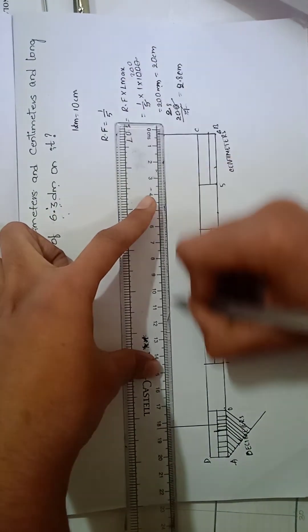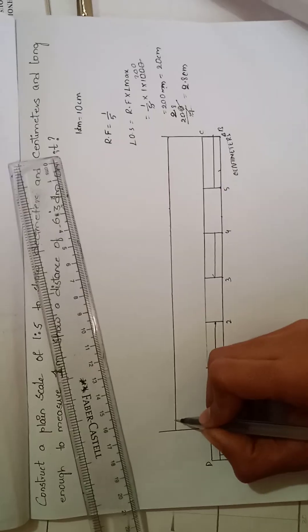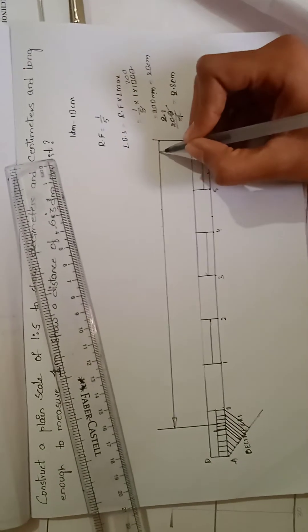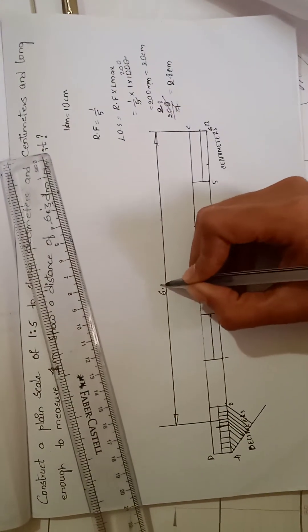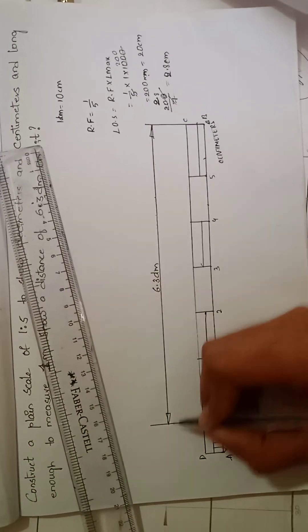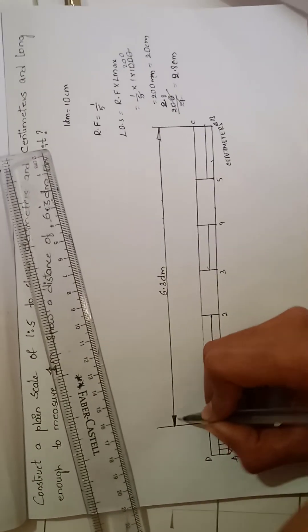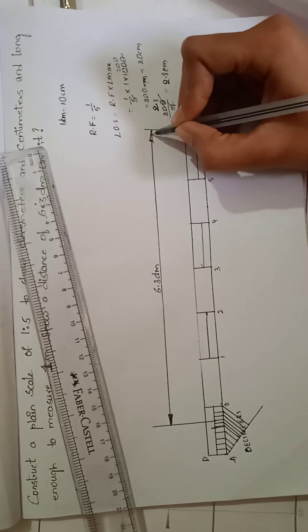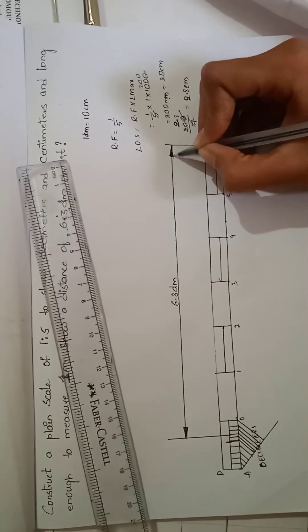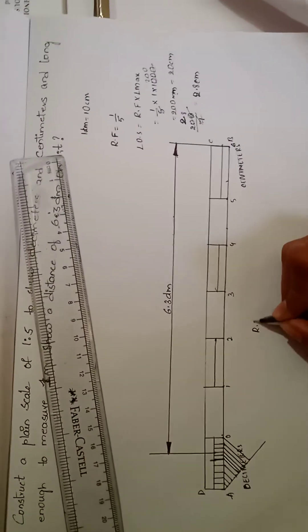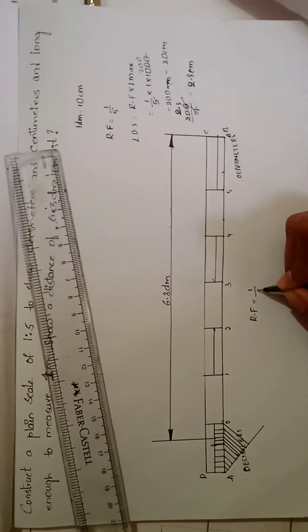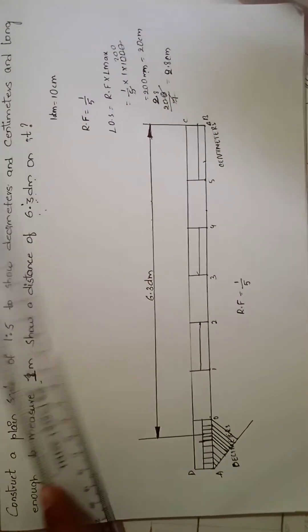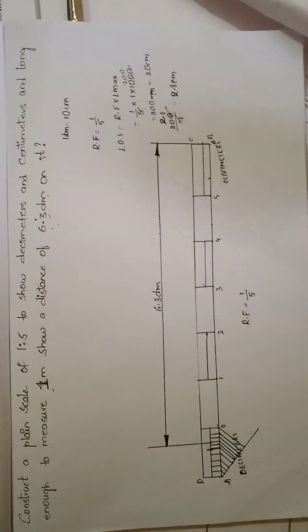This is our final solution. 6.3 decimeters. This arrow should be of 1 is to 3. What is the RF value we have to write here? 1 is to 5.